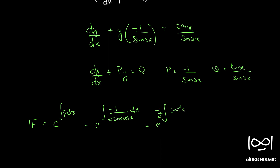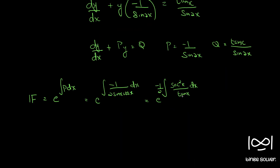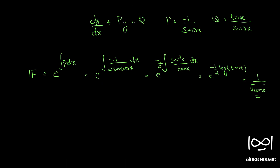After dividing by cos²x, sinx/cosx becomes tanx in the denominator, and 1/cos²x which is sec²x appears in the numerator. So we can write this as minus 1/2 · log(tanx), which gives the integrating factor as 1/√(tanx). So we have our integrating factor.